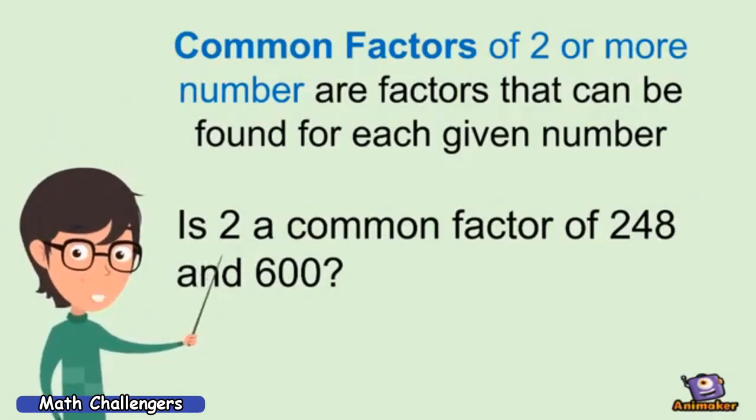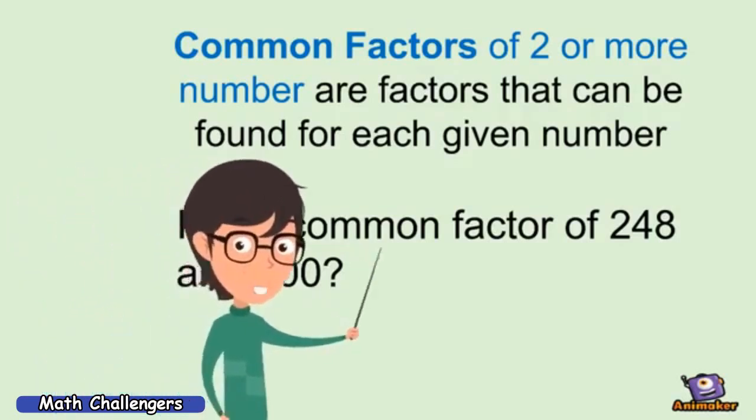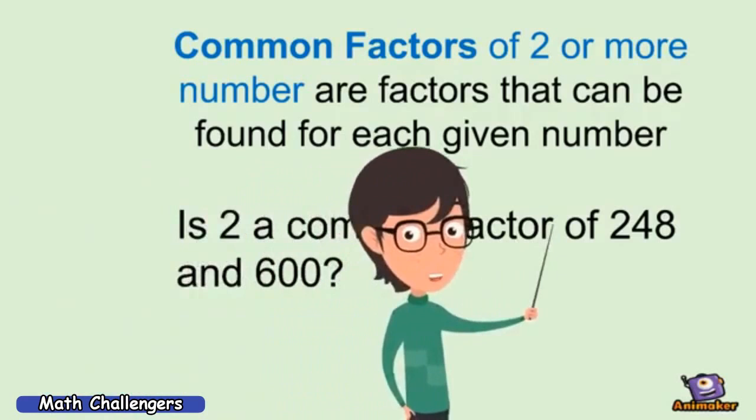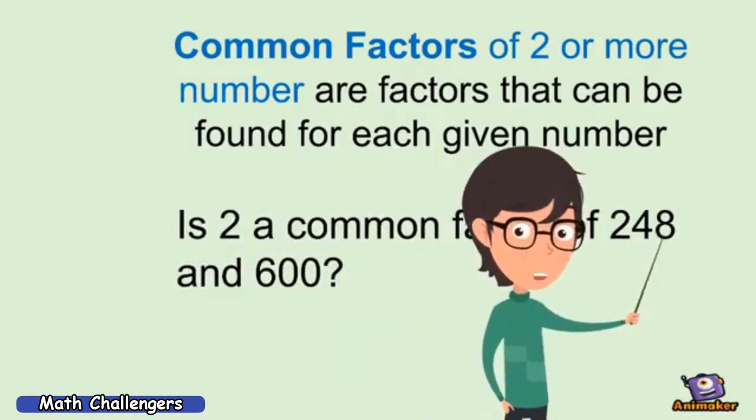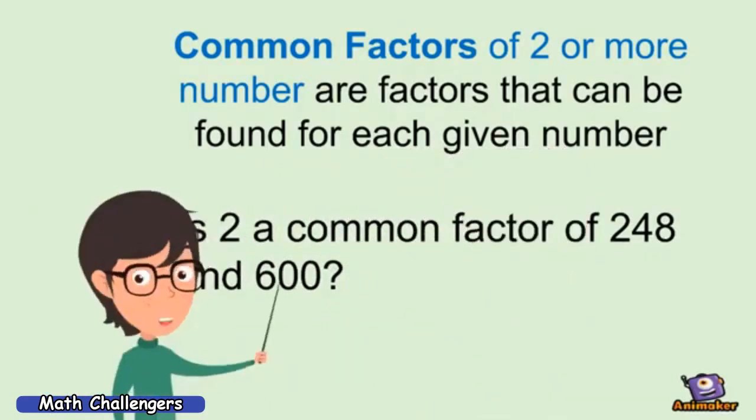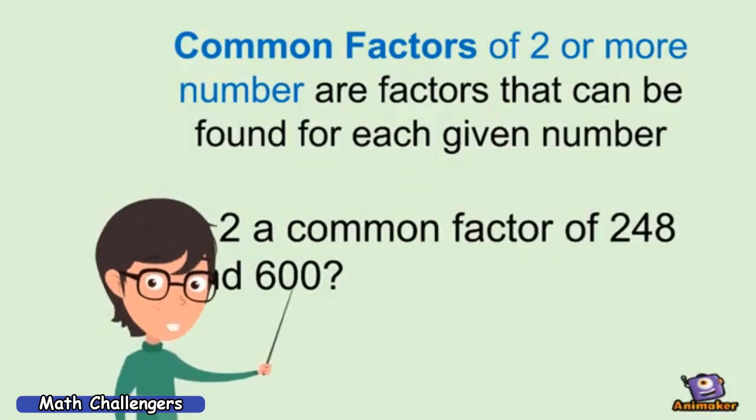To answer the question, you have to use the divisibility rule for 2, for both 248 and 600. The last digit of 248 is 8. It is divisible by 2. And the last digit of 600 is 0, which is also divisible by 2. Therefore 2 is a common factor of 248 and 600.